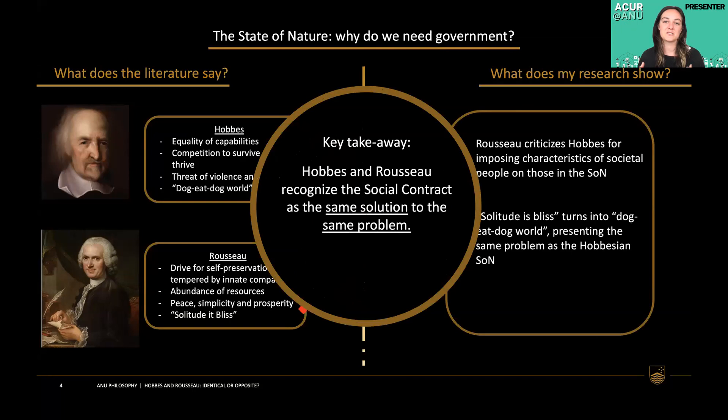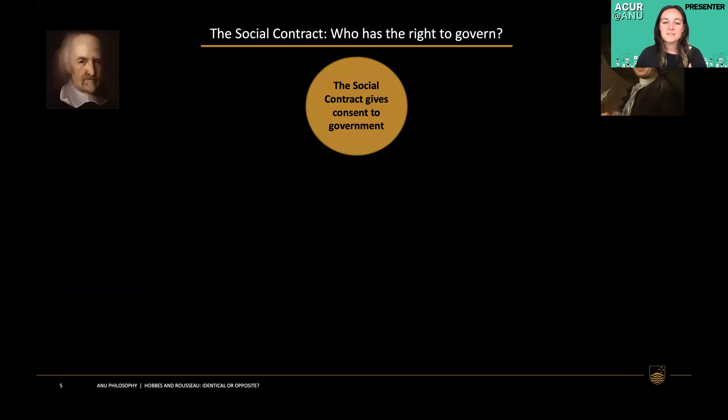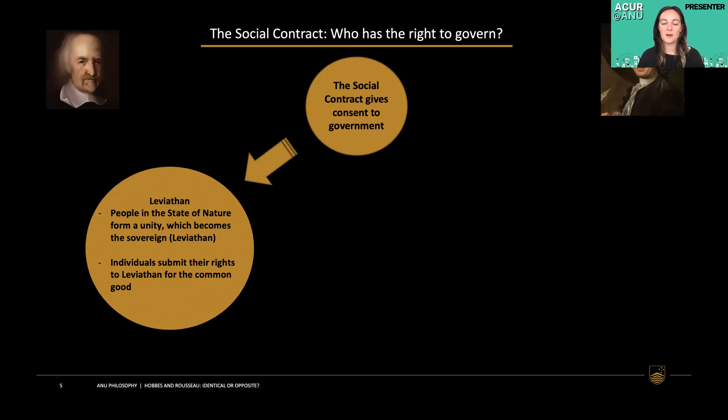Regarding the social contract and who has the right to govern: Hobbes has the idea of the Leviathan. He says that everybody in the state of nature comes together to unanimously and mutually give their consent to relinquish their completely individual rights for the good of the common people. Everyone comes together to form a unity — he calls that unity the sovereign — and that sovereign is the Leviathan, to whom individuals submit themselves, granting it absolute power to rule.